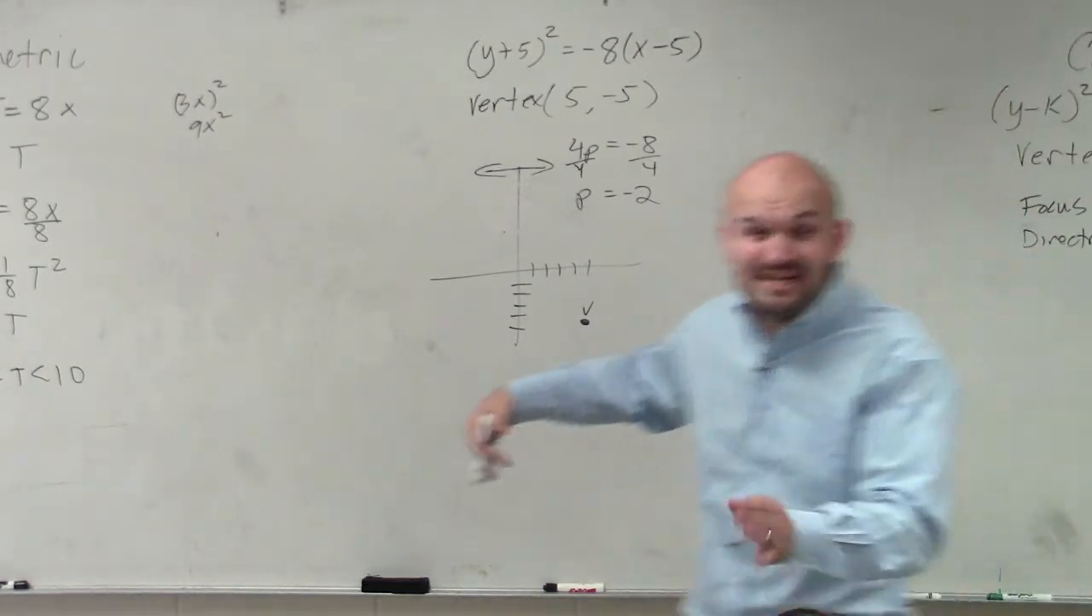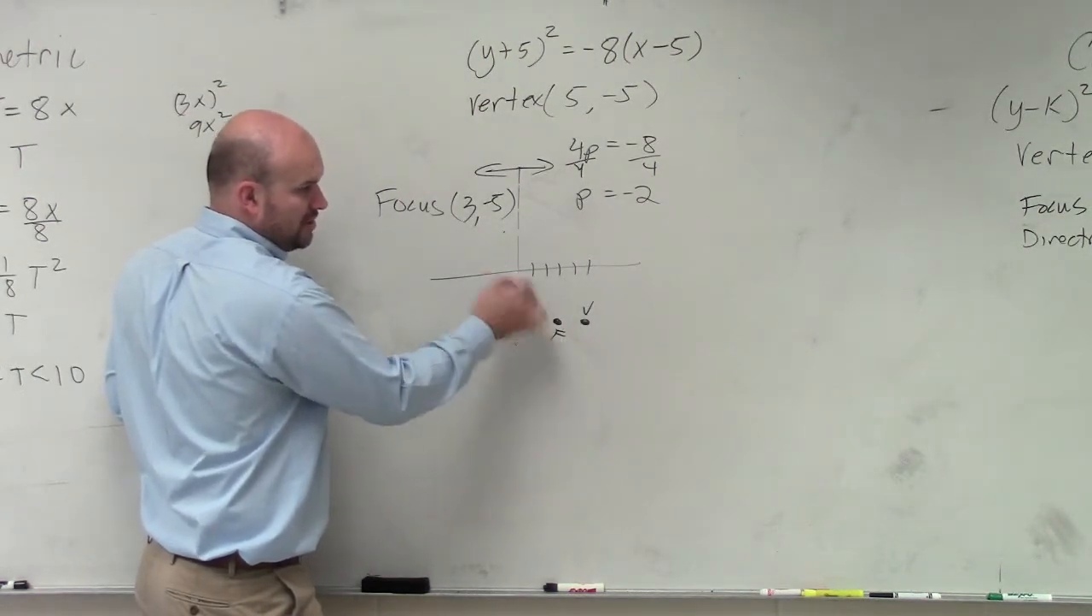So therefore if p is negative, should I go to the right or should I go to the left? To the left. So I go over two units and I label that over two units. So I can say my focus is now at three comma negative five. So originally the focus is at five, so you go over two.